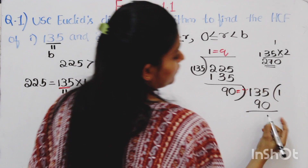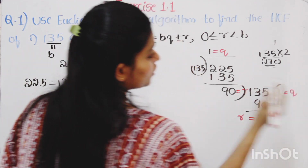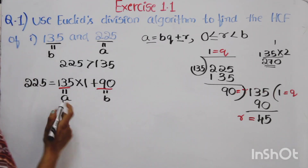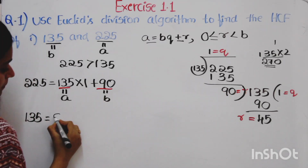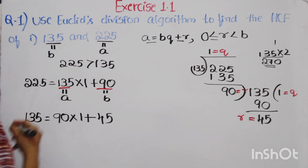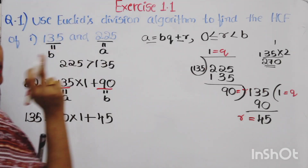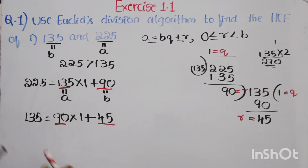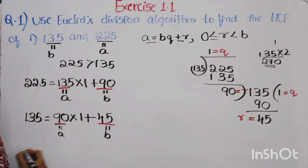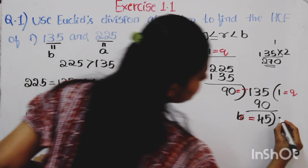Dividing 135 by 90: 90 times 1 is 90, so the remainder is 45 and the quotient is 1. Writing in the form A equals BQ plus R: A is 135, B is 90, Q is 1, and R is 45. Since the remainder is not equal to 0, again divide. Now take 45 as B and 90 as A.